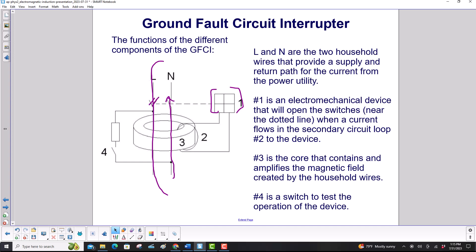Number one is your electromechanical switch. That will open these switches here that will interrupt the current flow. That happens when you have a current flowing in the secondary loop here. The secondary loop is wrapped around this metal core, but it's not electrically touching it. There's insulation between it and the core. And what's the core doing? It's amplifying the magnetic field and containing it. And that magnetic field is caused by these wires. You have current flowing, you have a magnetic field. And number four, this is where we can test the device to see if the switch is working.